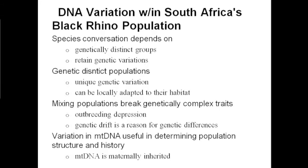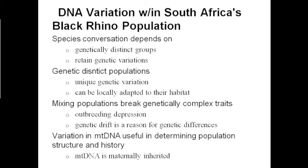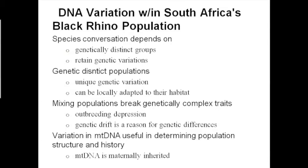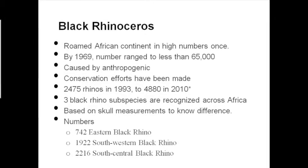Genetic drift results in changes in allele frequencies over time and is caused by a decline in population. Variation in mitochondrial DNA — mtDNA — is useful in determining population structure and history. mtDNA is maternally inherited, which is an important fact throughout this process.